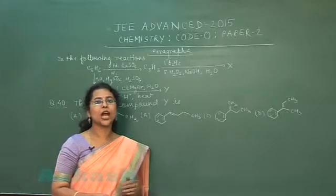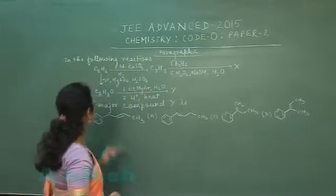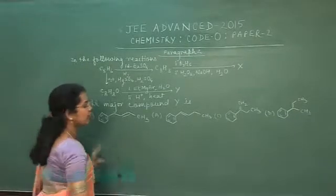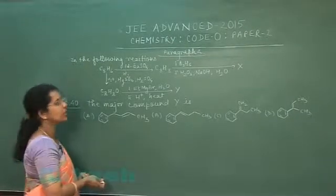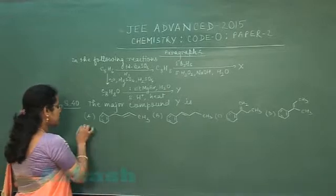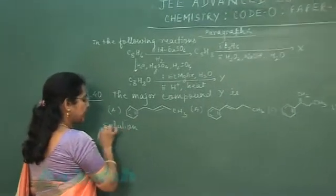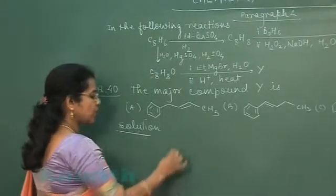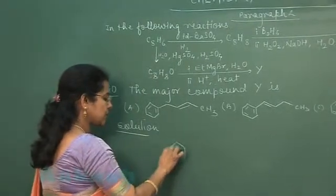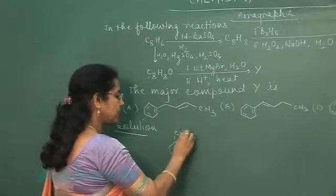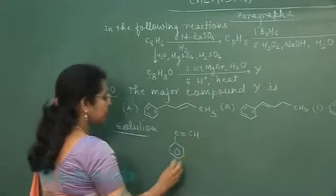So students, moving to the last question of today's paper, that is question number 40. The major compound Y is, and four structures are given in the question. Let us try the question. Solution. The first compound is C8H6. This is unsaturated compound must have this structure.